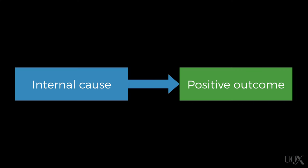We saw that the actor-observer bias reverses for positive outcomes. We attribute positive outcomes to more internal causes when thinking about our own behaviour compared to the behaviour of other people. This is effectively the same as the self-serving bias.